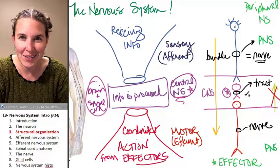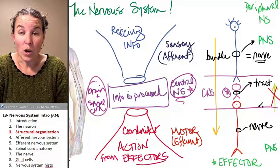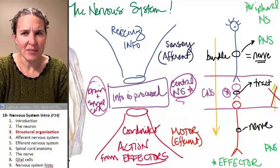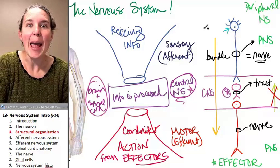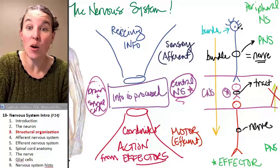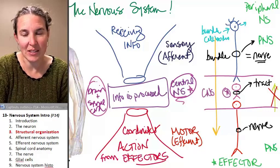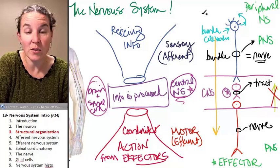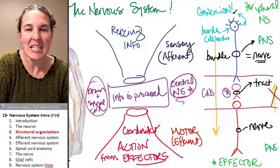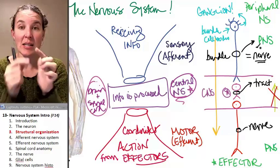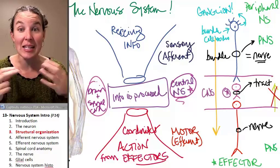If we have a whole bunch of axons anywhere, we're also going to have a bundle of cell bodies somewhere. A bundle of cell bodies in the peripheral nervous system is called a ganglion. So: a bundle of cell bodies is a ganglion, and a bundle of axons is a nerve.